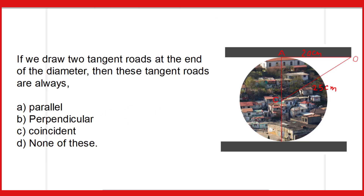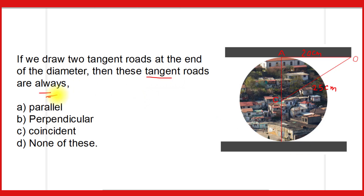The fifth question: if we draw two tangent roads at the ends of the diameter — here the diameter is shown, and at each end of the diameter two roads are constructed — then these tangent roads are always: parallel, perpendicular, coincident, or none of these? Please give your answer through the comment box — what do you think, parallel, perpendicular, coincident, or none of these?